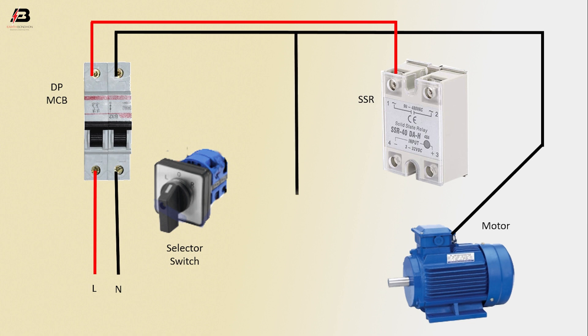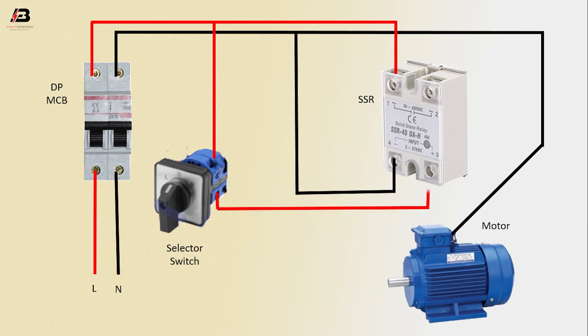Neutral connection input to SSR. Phase connection input to selector switch and connect to SSR. Output connection from SSR to connect motor. Now this circuit is ready for use.